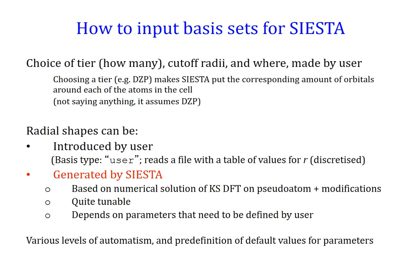Now the radial shapes. They can be either introduced by the user as a table, as a basis type user, or generated by SIESTA. SIESTA itself can generate different kinds of flavors of numerical basis sets, normally based on modifications of the numerical solution of the constrained DFT problem for the pseudo-atom isolated in space. They are quite tunable and depend on different parameters that you have to define.